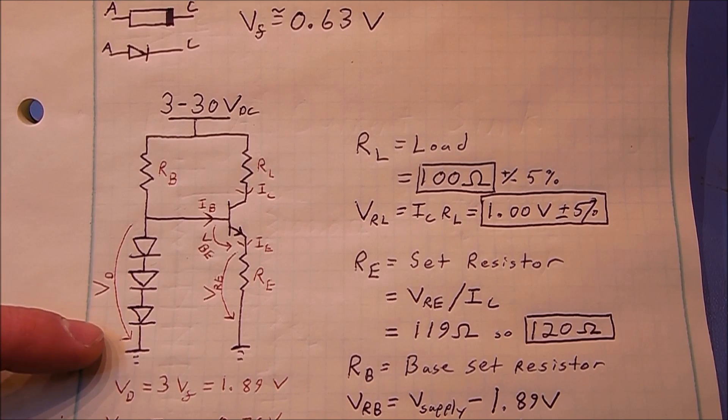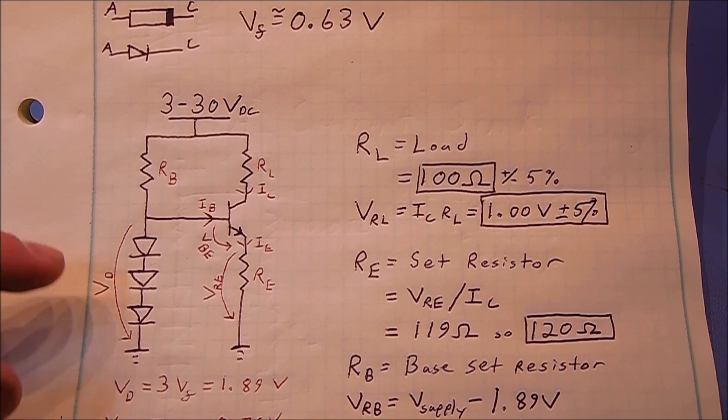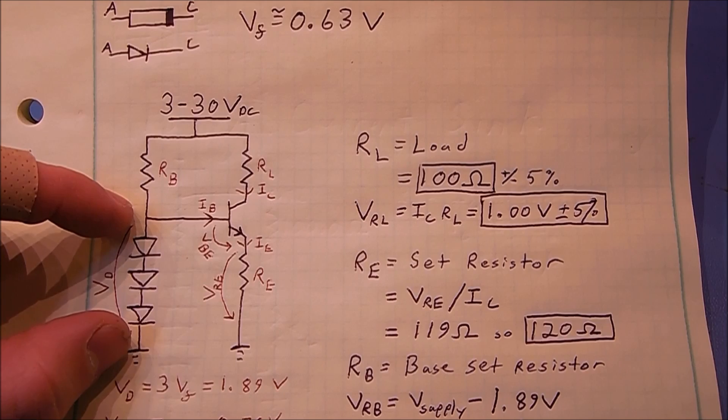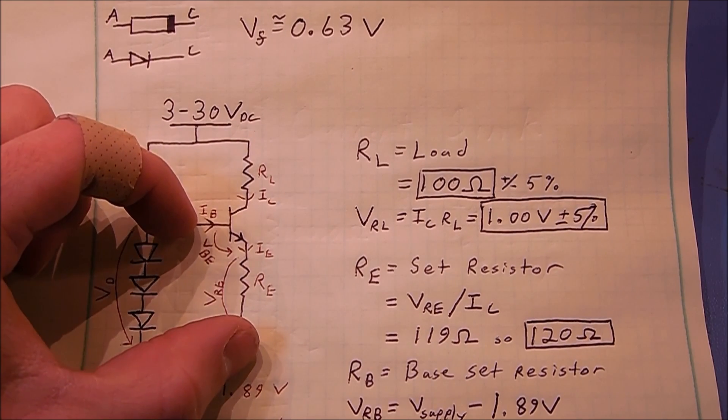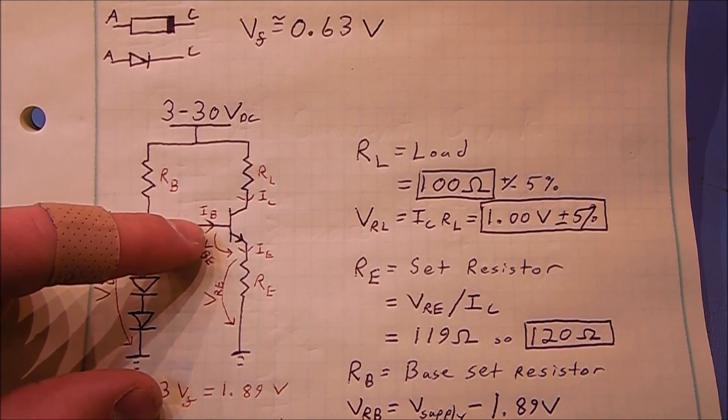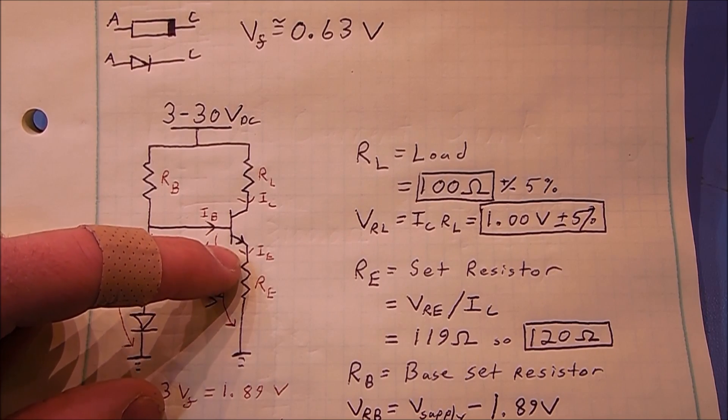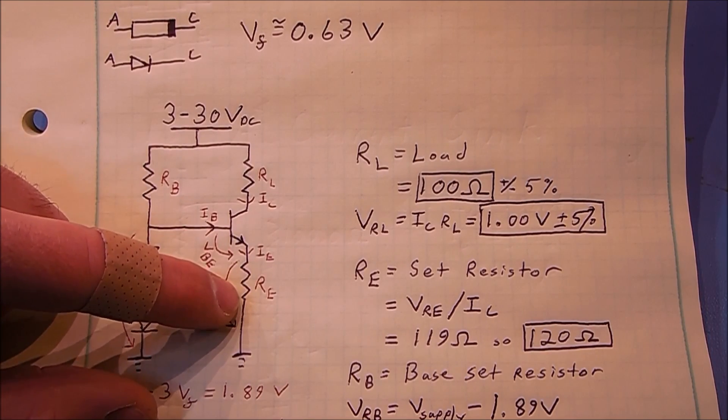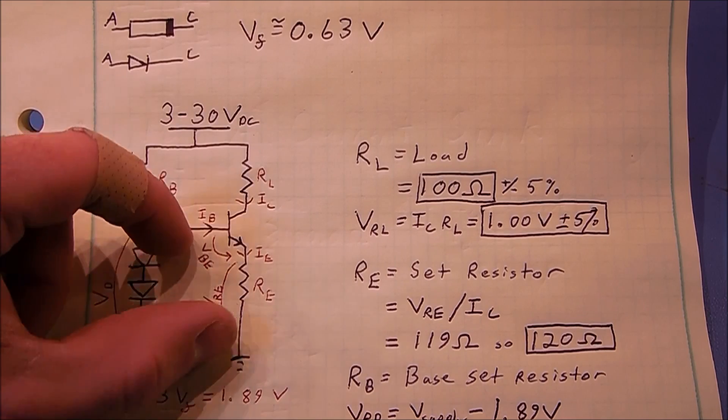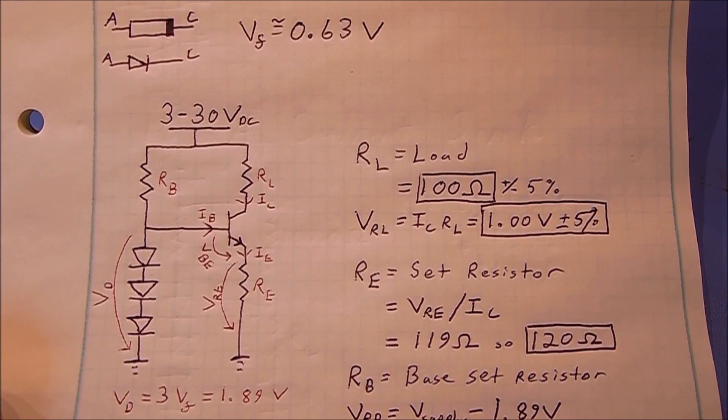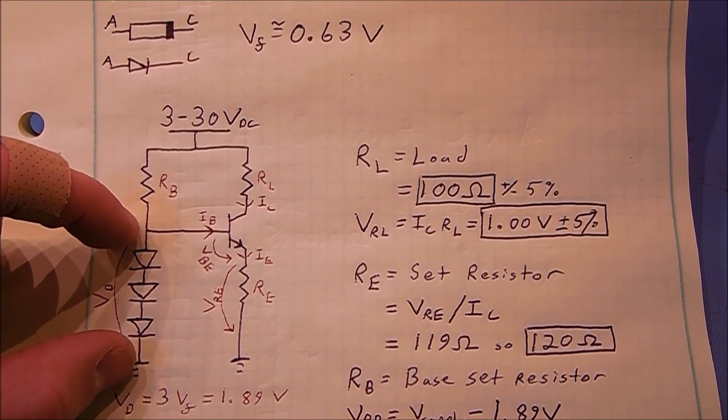The three diodes generate a 1.89 volt fixed voltage reference across this node. If we have our base to emitter junction and our emitter resistor, we know they have to add to 1.89 volts to be the same as this diode reference.